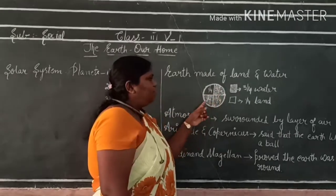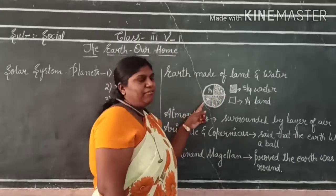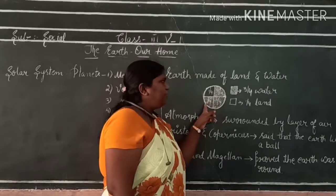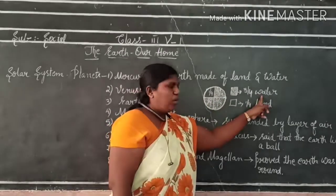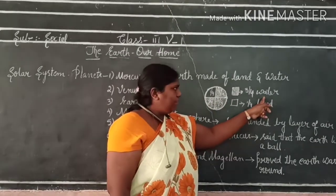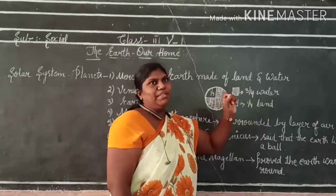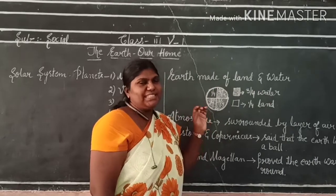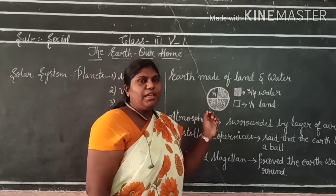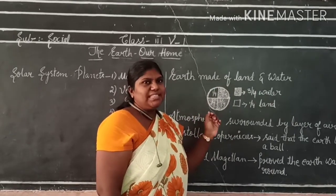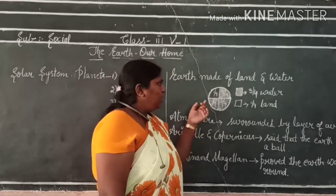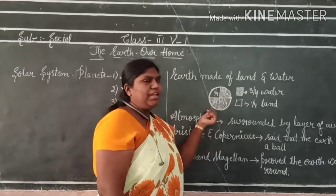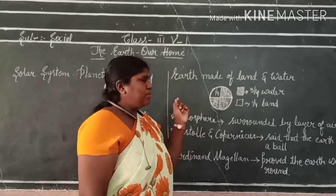These 3/4 parts represent water and 1/4 part is the land area. The 3/4 water part includes water forms such as oceans, lakes, rivers, seas, and ponds. These all come under water forms.